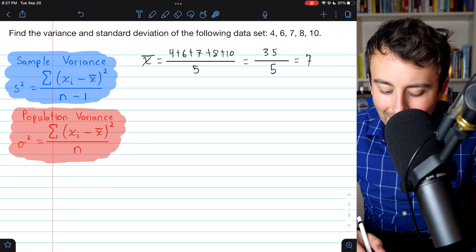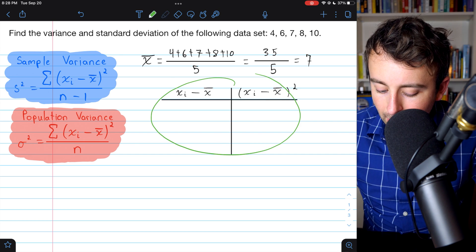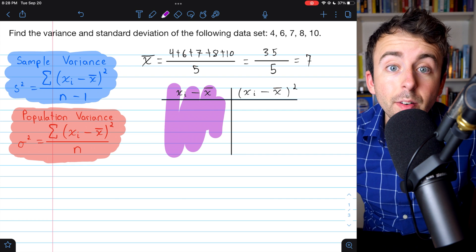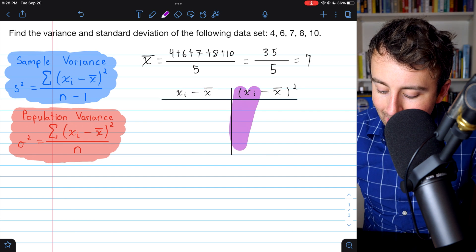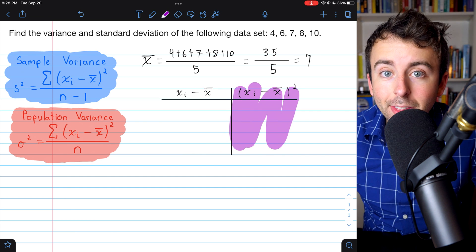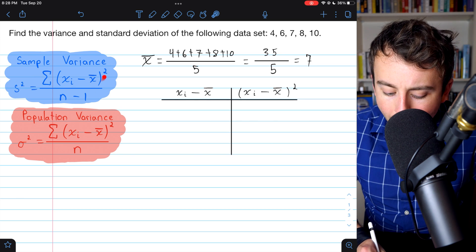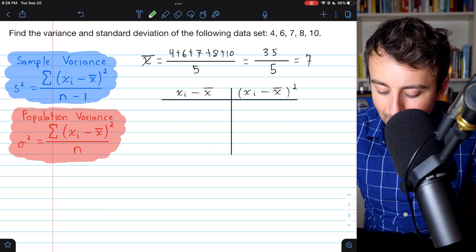Now we can start to calculate the differences from the mean. So I've just set up a little table here on the left. We'll calculate how far each data point we have is from the mean. And then on the right, we will just square that difference to calculate the sample variance. We need to add up all of those squared differences.